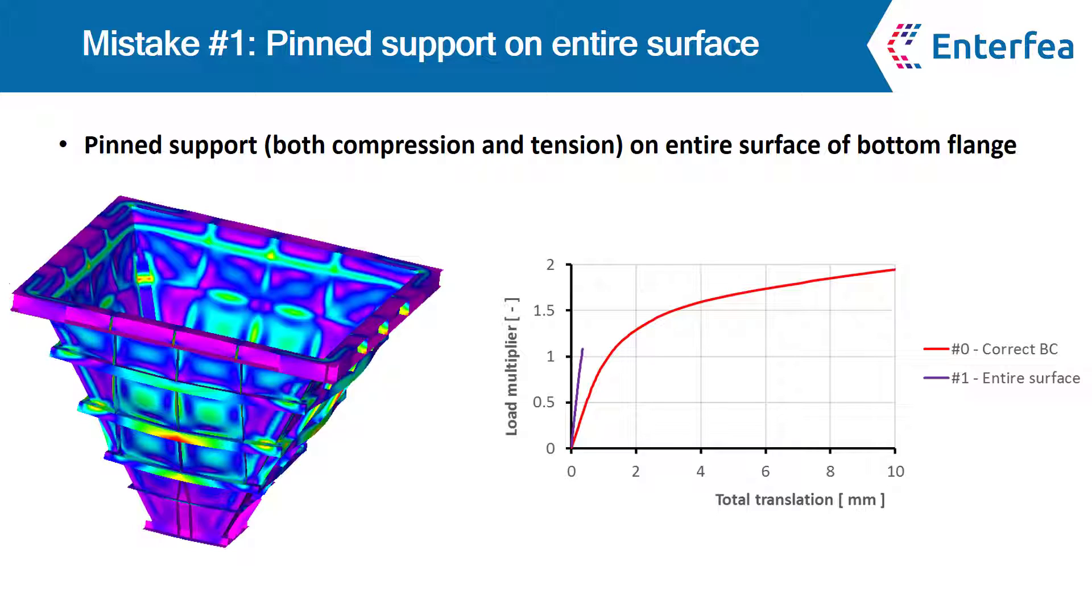Allowing tensile forces to be carried by our support is actually pretty important if you think about how this model works. The load in the hopper is eccentric when you think about the supporting beams. This means that those beams are actually in torsion.